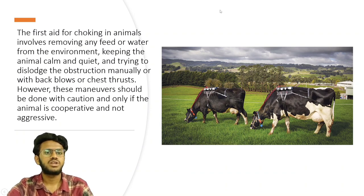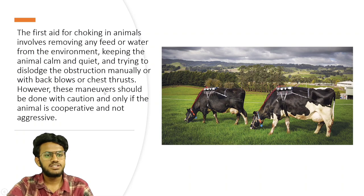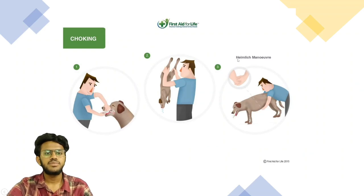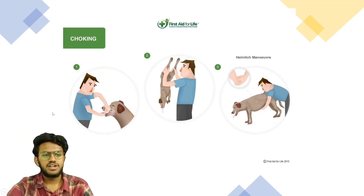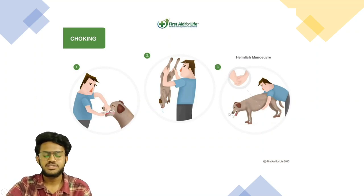First aid treatment for choking involves removing any feed or water from the environment, keeping the animal calm and quiet, and trying to dislodge the obstruction manually with back blows and chest thrusts. However, these maneuvers should be done with caution and only if the animal is cooperative and not aggressive. Here, a dog that is friendly with its owner is receiving back thrusts and chest thrusts.